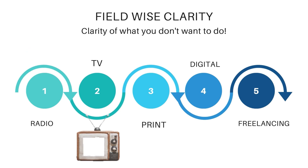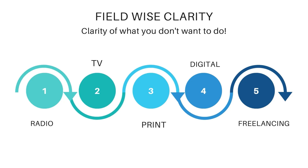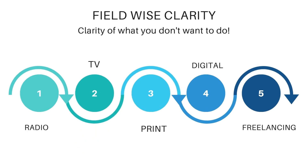Second, we have the TV industry. Again, we can divide this into two parts: entertainment and news. In entertainment, many students do journalism because they want to become actors or want to appear on screen. So if that is your intention, clarify it — whether you are okay with appearing on screen or not. If you want to work on the back end, mention that too.